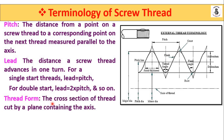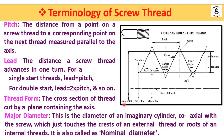Thread form is the cross-section of the thread cut by a plane containing the axis. Major diameter is the diameter of an imaginary cylinder coaxial with the screw that just touches the crest of external threads or the root of internal threads — it is also called the nominal diameter. For external threads, major diameter is the crest-to-crest distance; for internal threads it is the root-to-root distance.